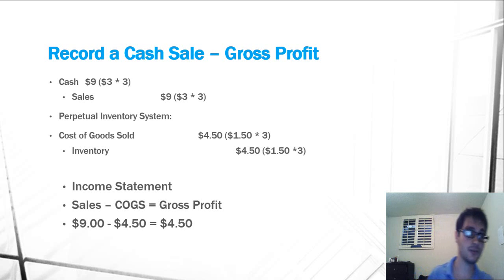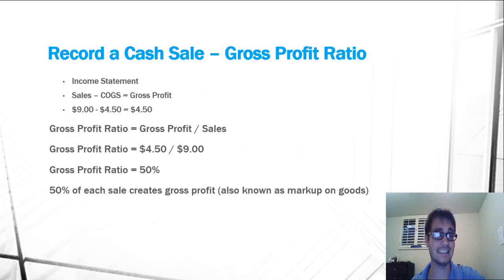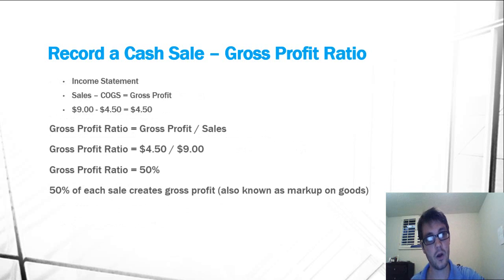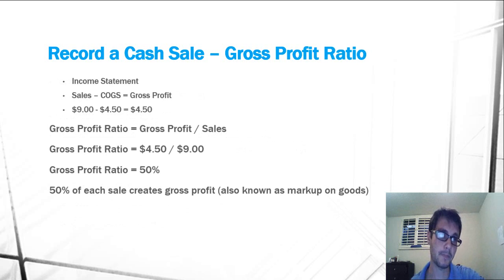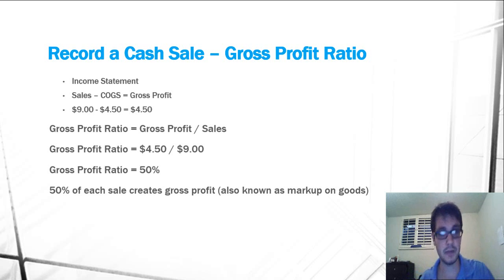Using this information, we can also calculate our gross profit margin, or ratio. The gross profit ratio is equal to gross profit divided by sales. So our gross profit ratio for this problem is $4.50 divided by $9, which equals 50%. That means for every dollar of sales we have, we're making $0.50 in gross profit. This is a very useful ratio and something you should memorize as soon as possible because it will make the rest of your studies much easier.